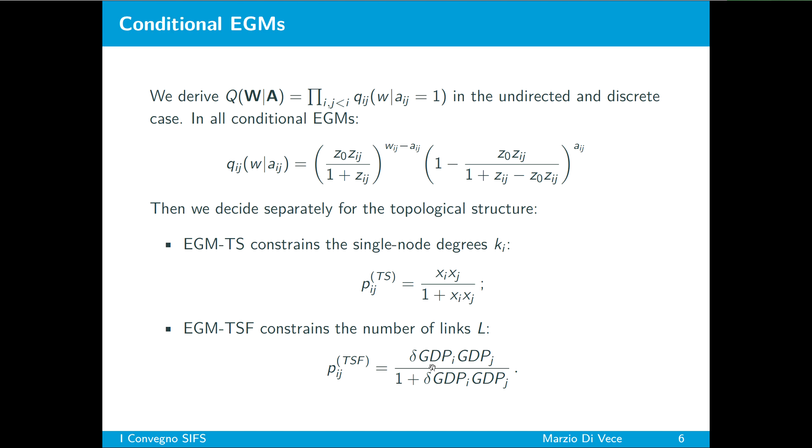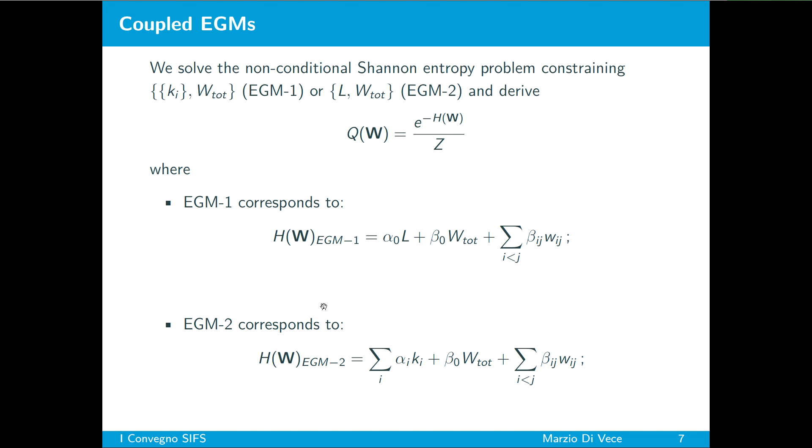And we maximize conditional Shannon entropy where this is the function that sees variation of possible configurations in the adjacency matrix and in the weight matrix. This function is subject to normalization of the conditional distribution and to available data information given as constraints and results in a canonical form, which can be still factorized in link specific distribution.